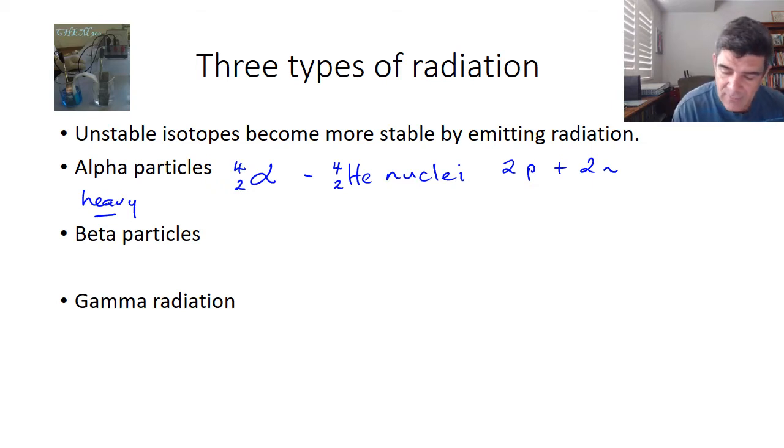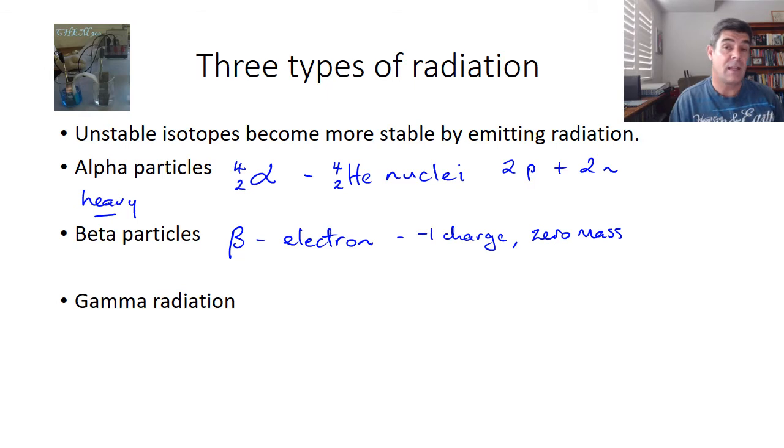Beta particles have the same characteristic as an electron, a high-speed electron which goes whizzing out of the nucleus. This means it has a negative one charge, but effectively zero mass. Now it's not zero, but it's very low. If we're using this nomenclature for our nuclear equations, we put a minus one to indicate the negative charge, or the negative charge that's equivalent to a proton, and zero for mass. So this is how we denote beta particles.